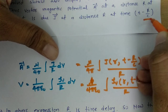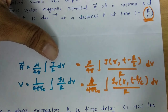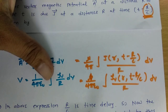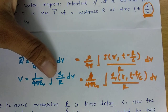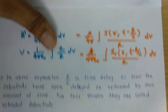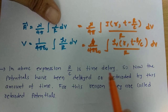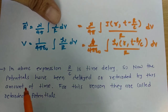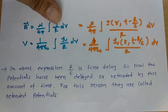This expression is getting delayed by R/C time, so it is retarded by R/C time. This expression is referred to as retarded potential. In the above expression, R/C is the delay time. The potential has been delayed or retarded by this amount of time. For that reason, these potentials are called retarded potentials.